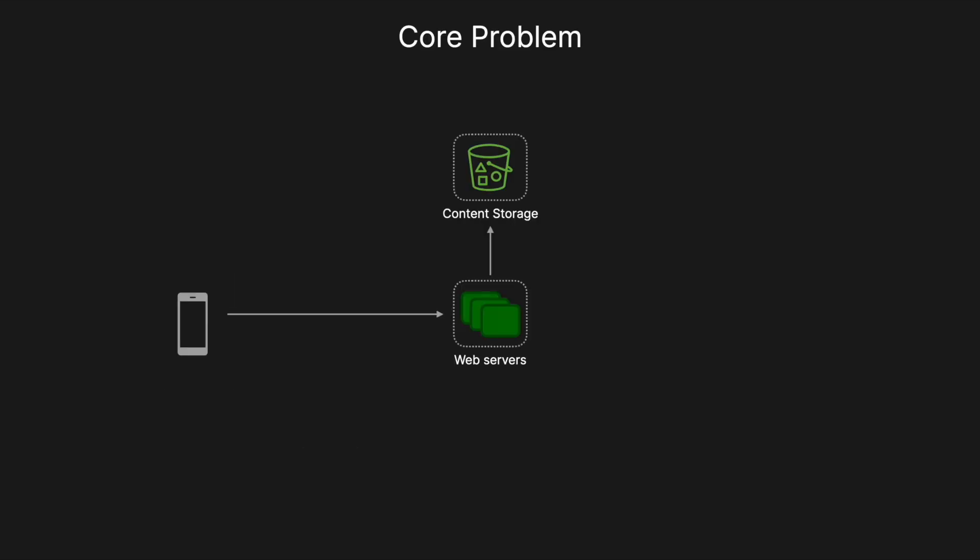What's shown here isn't the actual architecture — it's just for demonstration. Let's say we're working on a large 2GB file and we simply add a character to the end of it. We'd have to send that entire file to web servers, which then store it in content storage like AWS S3. That's a lot of storage and bandwidth for just one tiny file change.